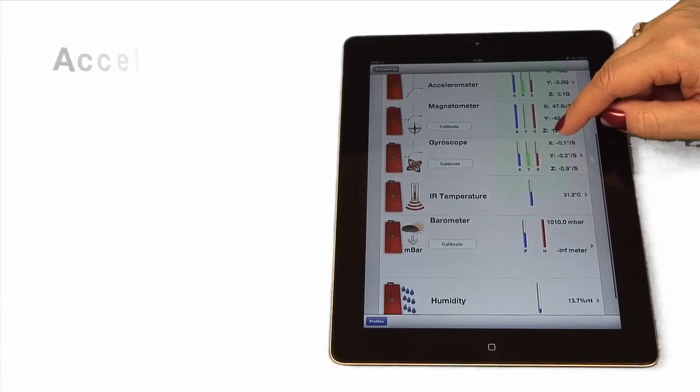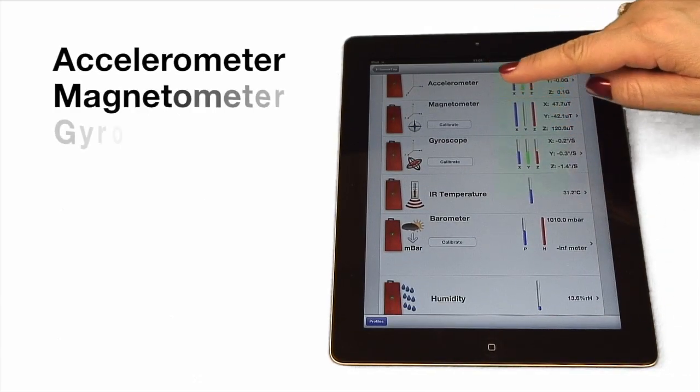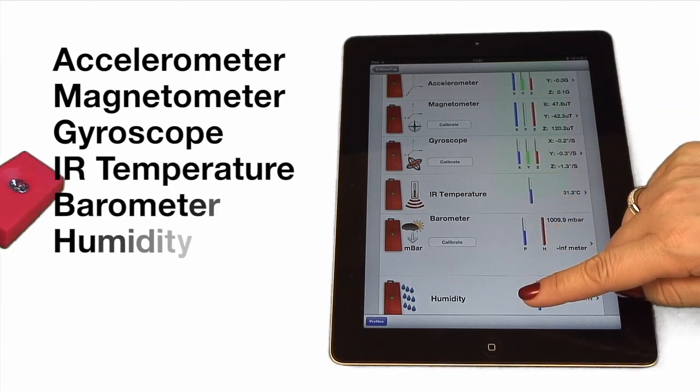Here you see the six sensors: accelerometer, magnetometer, gyroscope, IR temperature, barometer, and humidity.